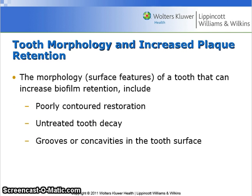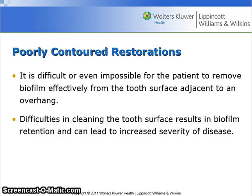The morphology or surface features of a tooth can increase biofilm retention. These include poorly contoured restorations, untreated tooth decay, and grooves or concavities in the tooth surface itself. Here is an example of a poorly contoured restoration — see the distal of tooth number 19 and the bone loss associated with that overhang. It is difficult or even impossible for the patient to remove biofilm effectively from the tooth surface adjacent to an overhang. Difficulties in cleaning the tooth surface result in biofilm retention and can lead to increased severity of disease.